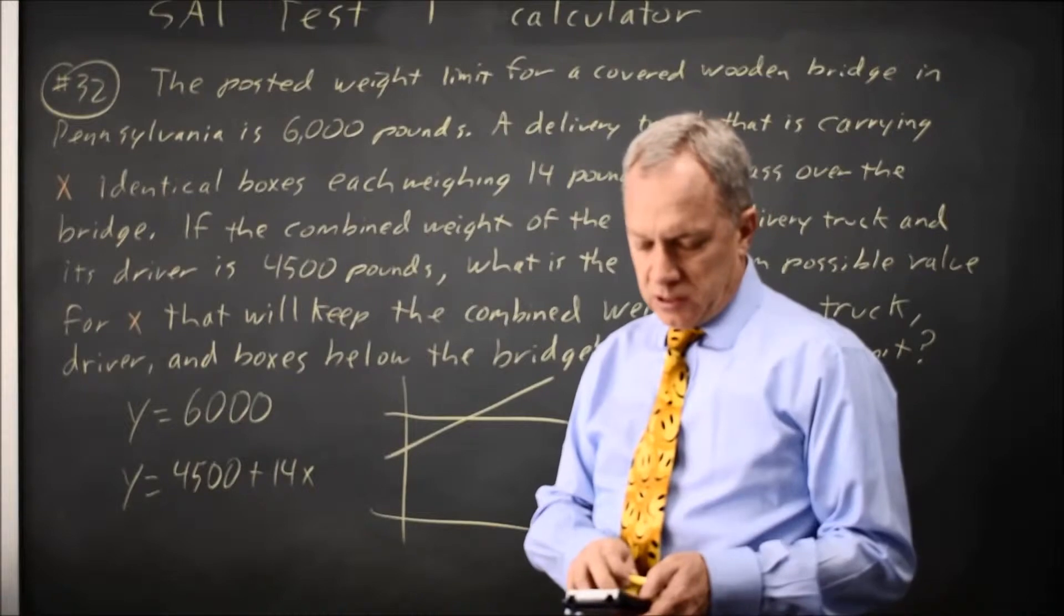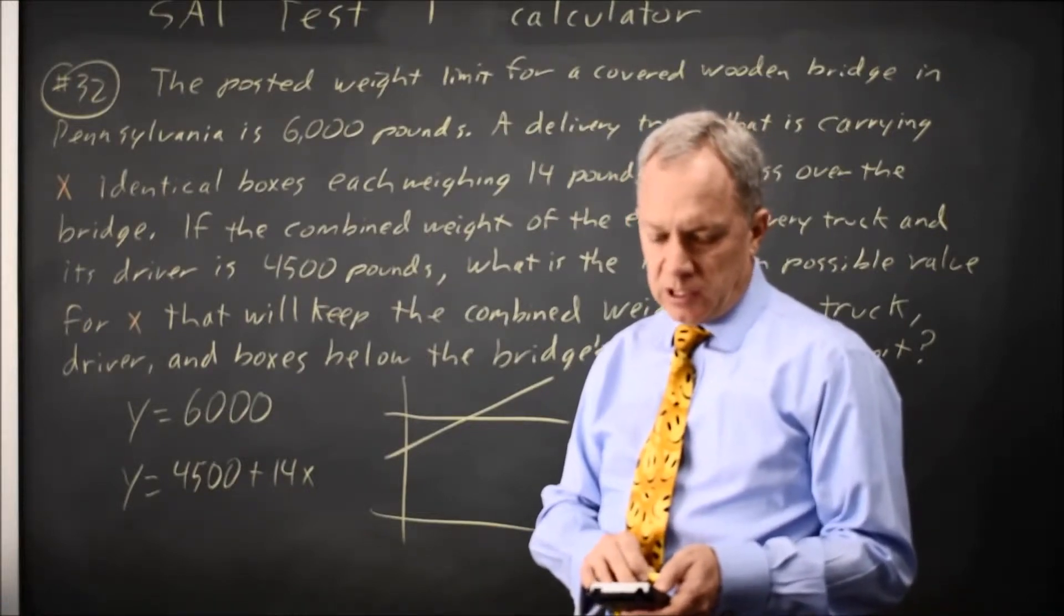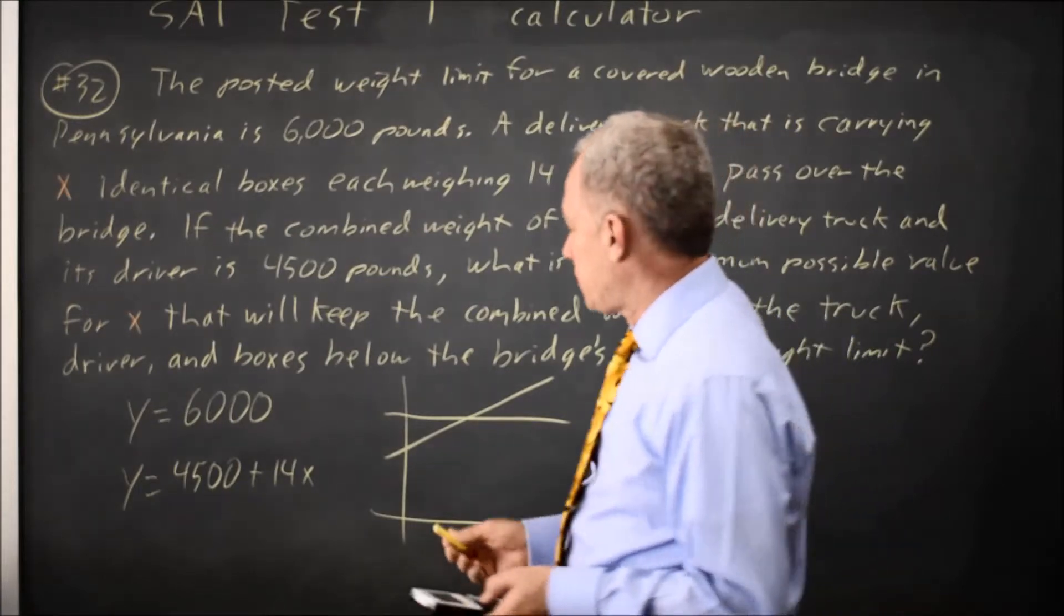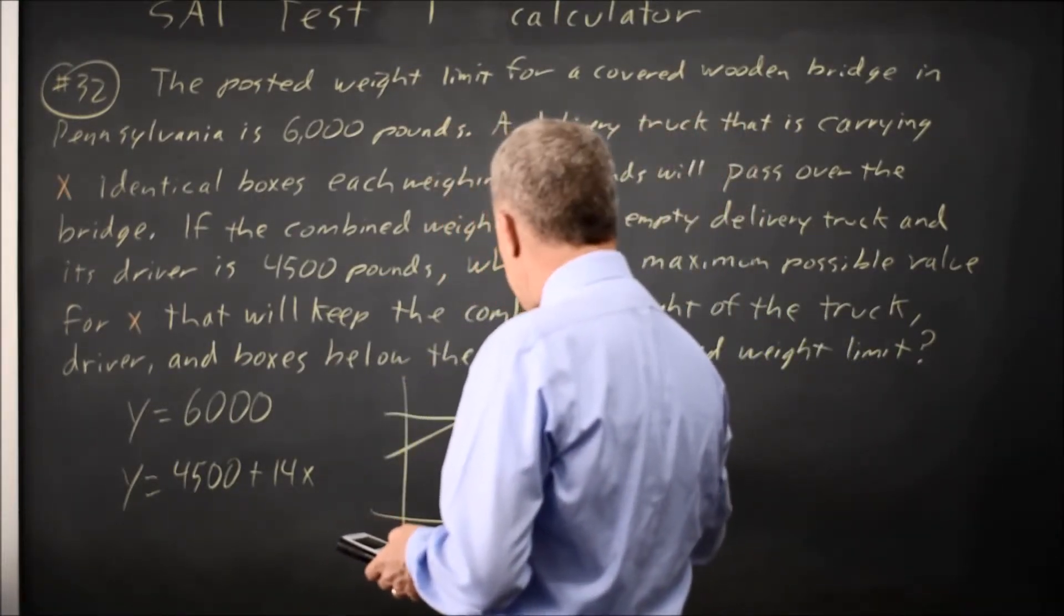Second calc, arrow down to choice 5, intersect on the TI-83 or 84, hit enter 3 times, and I get X equals 107 point whatever.